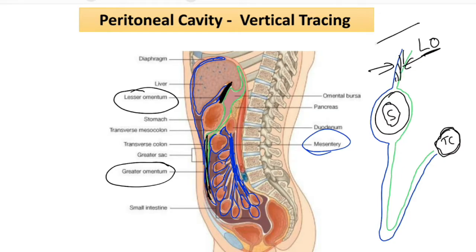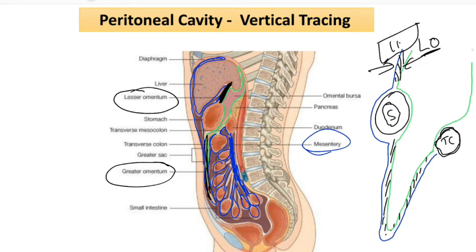From the liver to the stomach we have the lesser omentum, and below the stomach we have the greater omentum. This layer is coming and going backward, meeting with the same layer. Similarly, the other layer is covering the transverse colon and going toward the posterior abdominal wall. The portion holding the transverse colon is known as the transverse mesocolon.